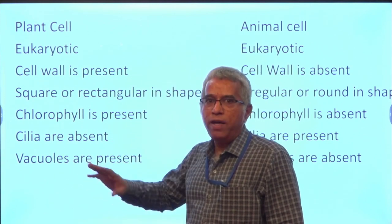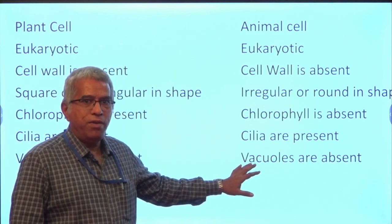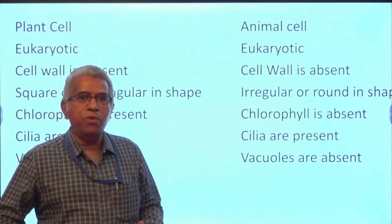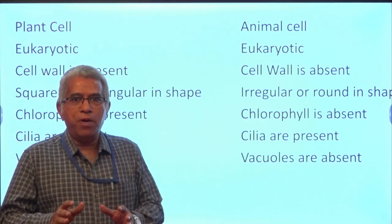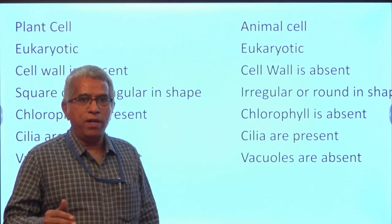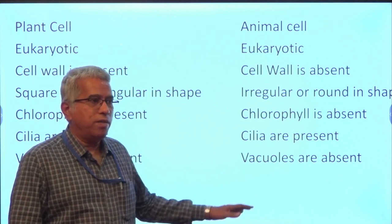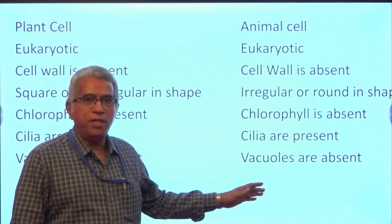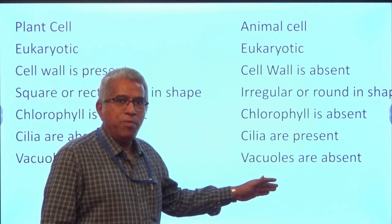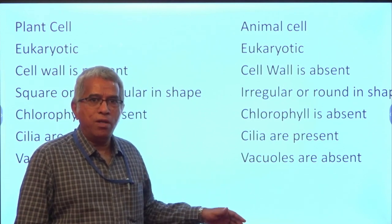Vacuoles are present in plant cells; you don't find these vacuoles in animal cells, but there are certain exceptions where even animal cells will exhibit certain vacuoles — like contractile vacuoles and food vacuoles. For example, protozoans such as Amoeba and Euglena normally contain contractile vacuoles and food vacuoles. So vacuoles are present in animals like protozoans, but in higher-grade animals such vacuoles are completely absent.